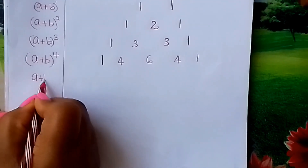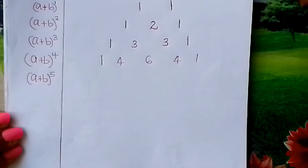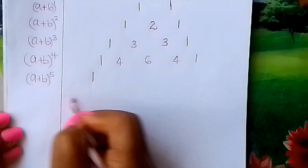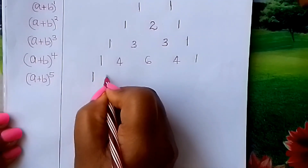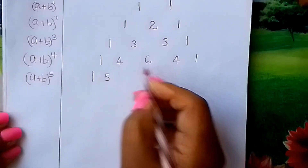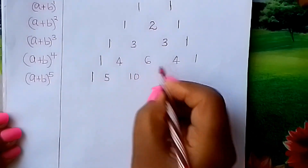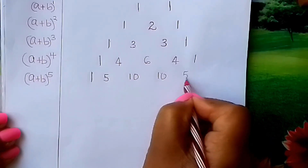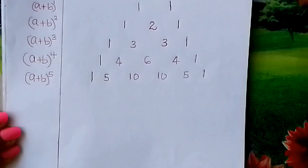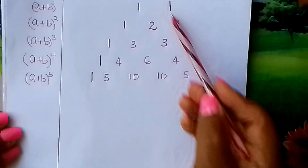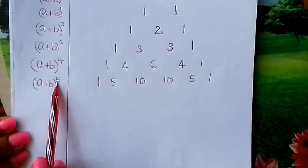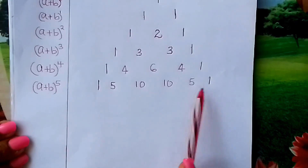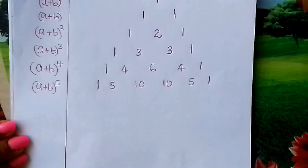We go to (a + b) raised to 5. You come and fix your 1 here in a slanting manner. This plus this gives us 5. Write it at the middle down here. This plus this gives us 10. 10 plus this gives us 10. This plus this gives us 5. And finally, 1. So when the power is 5, the coefficients are 1, 5, 10, 10, 5, 1.